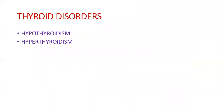Coming to thyroid disorders — what is hypothyroidism? When the thyroid gland does not produce enough hormone, it causes a reduction in metabolic rate, and that is called hypothyroidism. We have studied that the thyroid gland is responsible for good metabolic rate, digestion, increased cardiac activity, and respiratory rate. So if hormone secretion is not happening, all three of these activities would be affected.